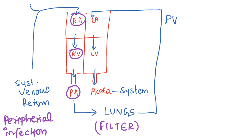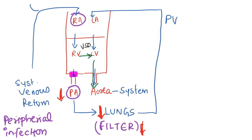In tetralogy of Fallot, there is subpulmonary stenosis, so blood cannot flow freely from the right ventricle into the pulmonary artery — creating obstruction and decreased flow, meaning the lungs have decreased perfusion and the filtering effect is reduced. Additionally, there is a ventricular septal defect — a communication between the right and left ventricles. Because of this, blood from the right ventricle, not fully going into the pulmonary artery, shunts into the left ventricle, then into the aorta and systemic circulation.